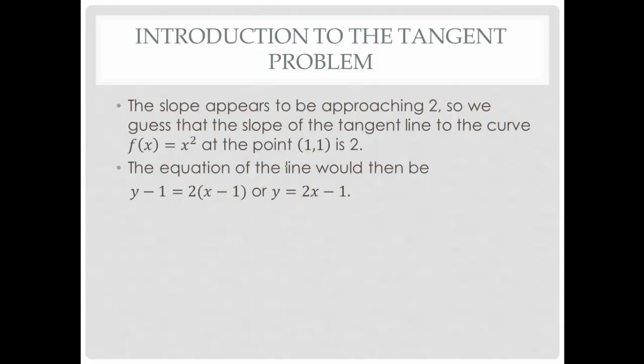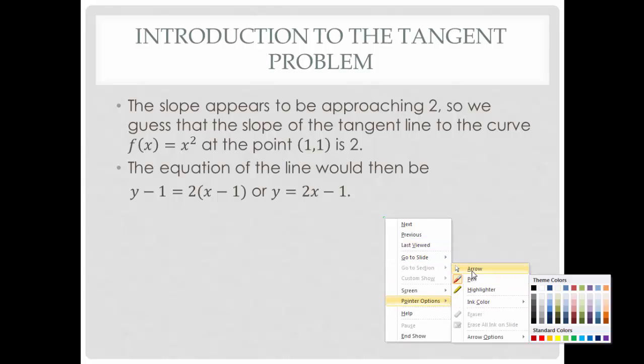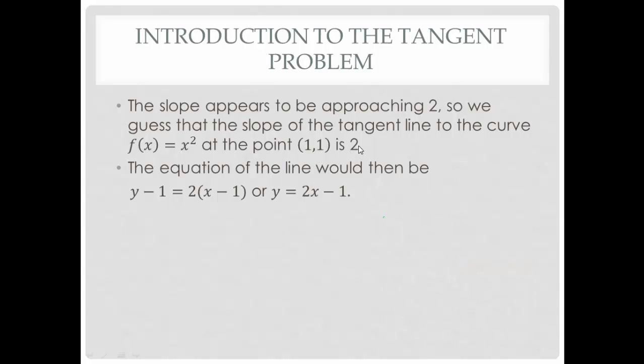In conclusion, the slope does appear to be approaching 2. We guess that the slope of the tangent line to the curve f(x) = x² at (1,1) is 2. The equation of the line would then be, using point-slope form: y - 1 = 2(x - 1). When you do these kinds of tangent problems in this way, these are a guess or estimate. It's a good estimate, an educated estimate, but it's an estimate. You do not know this for a fact. If that estimate is true, then solving for y gives you y = 2x - 1.